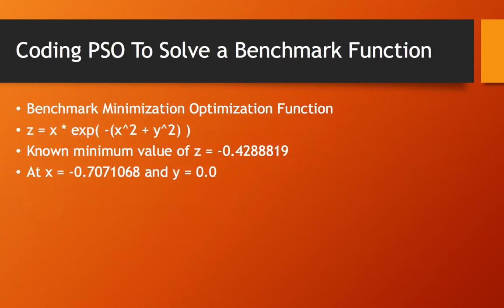I'm going to go over coding a simple benchmark function. It's z equals x times the exponent of negative x to the power of 2 plus y to the power of 2. We know that a minimum value of z is negative 0.4288819 at the given x and y coordinates.